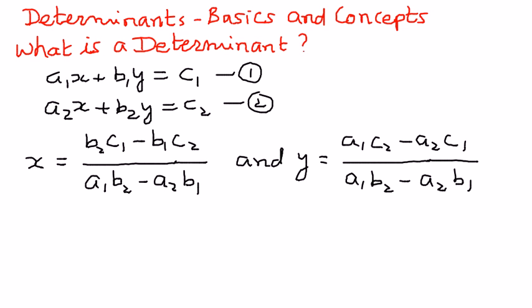Provided that the denominator, this part a1b2 minus a2b1 in the x part, and then a1b2 minus a2b1 for y. The denominators are the same in both these equations, and therefore provided the denominators do not go to 0. In this case, the denominator is called the determinant.